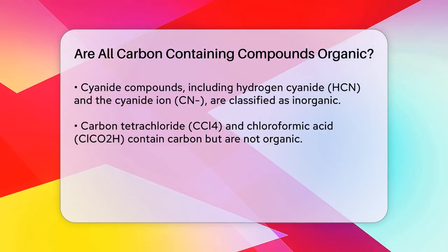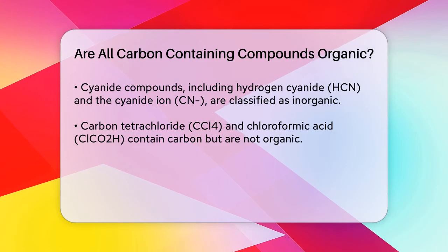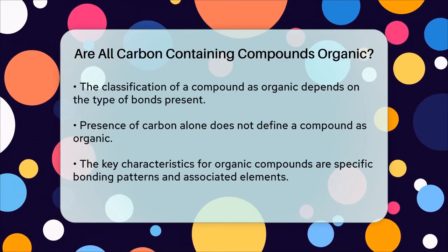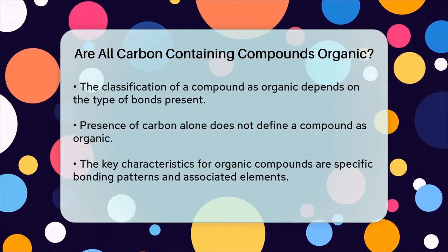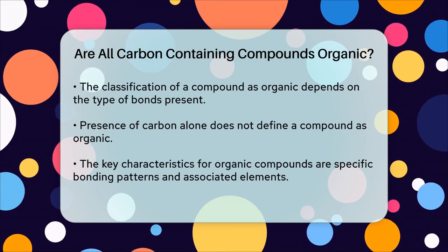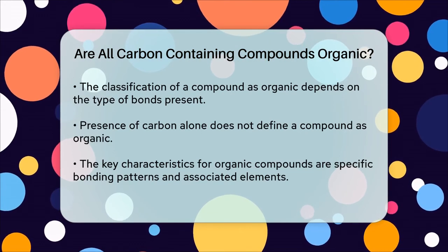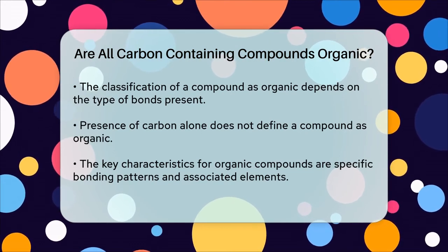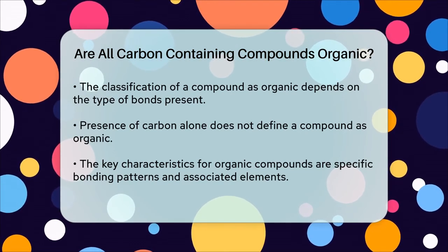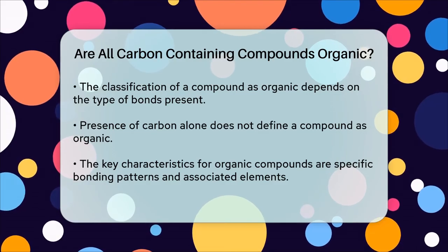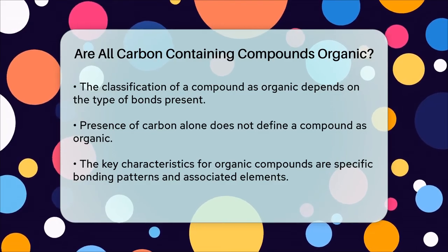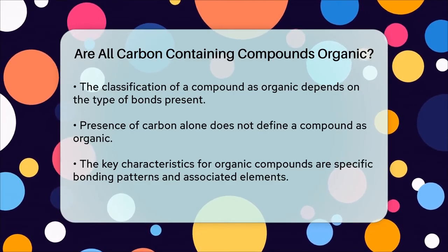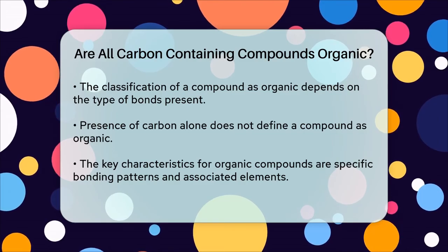So, what makes a compound organic? It's the presence of carbon atoms covalently bound to other atoms, particularly hydrogen, oxygen, and nitrogen, and the specific types of bonds between these atoms. If a compound lacks these characteristics, even if it contains carbon, it is not considered organic.